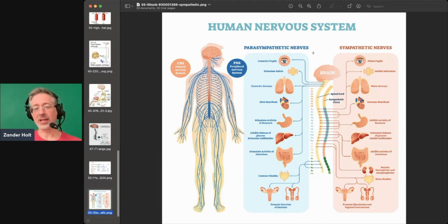Parasympathetic is when we're nice and relaxed. If you can see down here - you probably can't see it - but it says promotes erection of genitals. That's where erections happen.